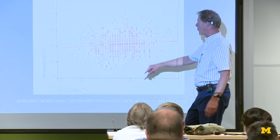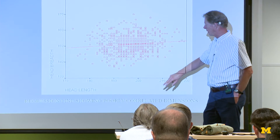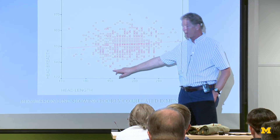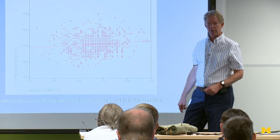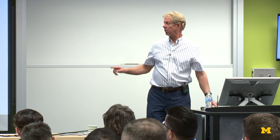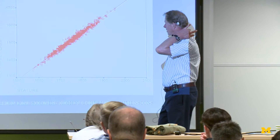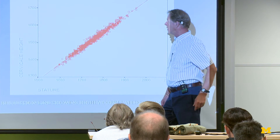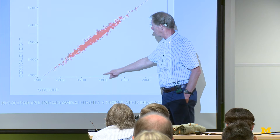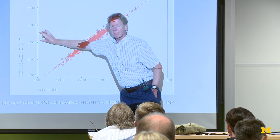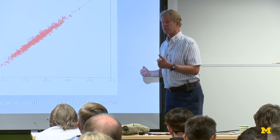Head length and head breadth are poorly correlated dimensions. If I know my head length is 190, what's my head breadth? Well, it could be anywhere across practically the whole distribution of head breadth — they don't tell me much one about the other, even though it's statistically significant if my N is large enough. On the other hand, there's a point on the back of the neck called cervicale, and cervicale height and stature are highly correlated. So if my stature is 1800, I know that my cervicale height is between roughly 1520 and 1550 — that's useful information about the relationship of those two dimensions.